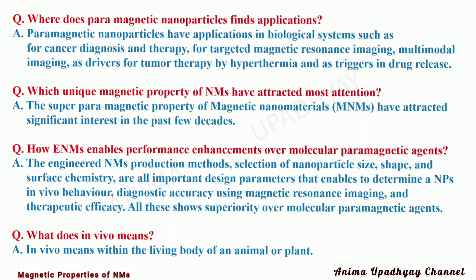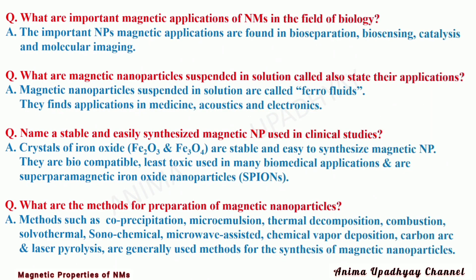What does in vivo mean? In vivo means within the living body of an animal or plant. What are the important magnetic applications of nanomaterials in the field of biology? The important nanoparticle magnetic applications are found in bio-separation, bio-sensing, catalysis, and molecular imaging.